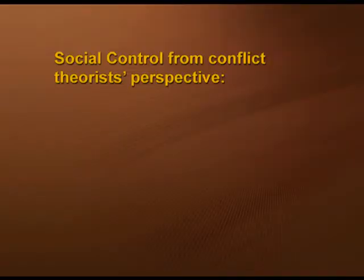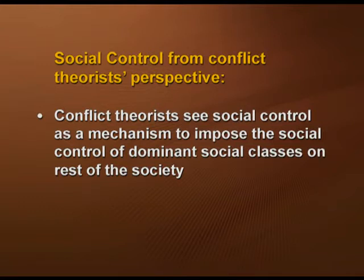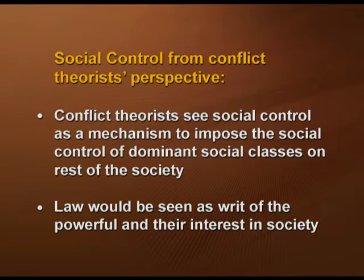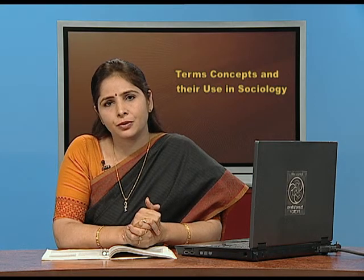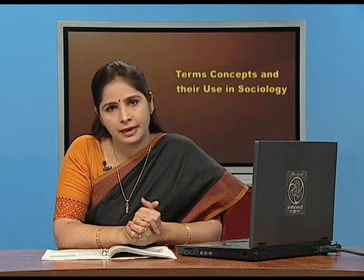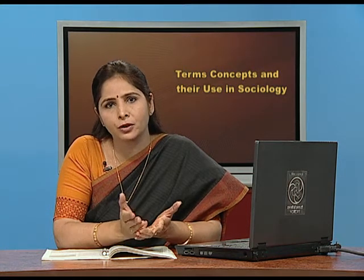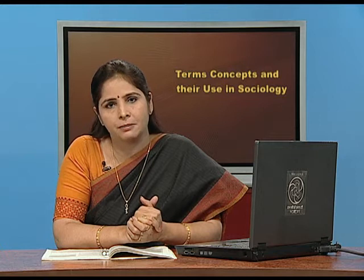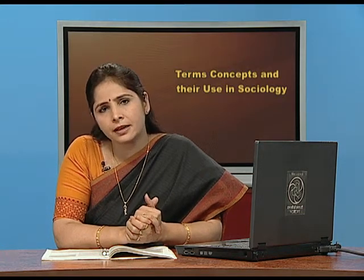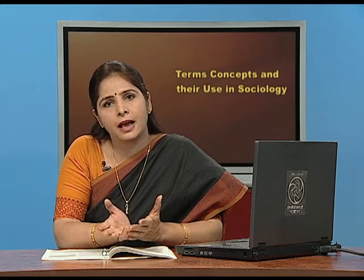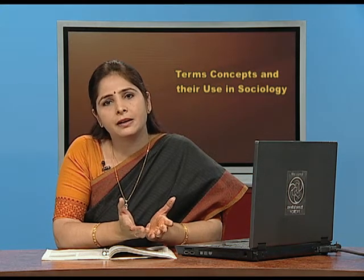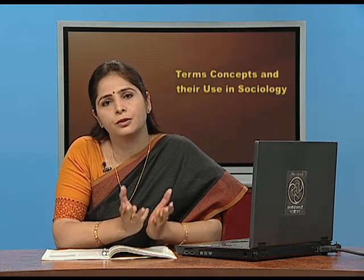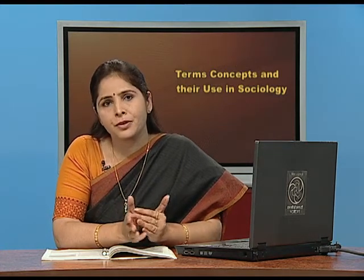From the conflict theory perspective, social control is seen as a mechanism to impose the control of dominant social classes on the rest of society, and law is seen as serving the rich and powerful. The functionalist view says social control is important for stability and cohesion, while conflict theory says it creates unrest and inequality — this is the main difference between the two perspectives.